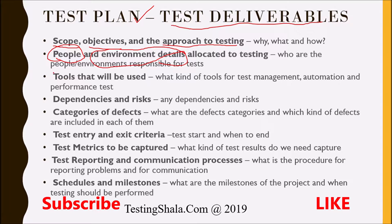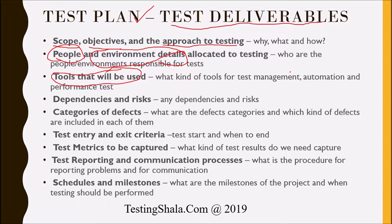The third item we are going to clearly call out is the tools that would be used in our testing. We will clearly call out what kind of tools will be used for test management — especially test cases tracking, review of test cases tracking, and defect management tracking. All of this comes under test management tools and we need to clearly call that out.